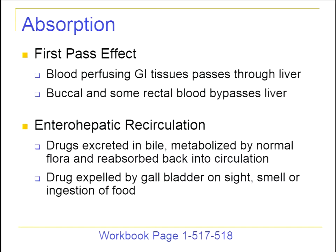We're now going to go into ADME: absorption, distribution, metabolism, and excretion. Starting with absorption — a few key concepts. First-pass effect: blood perfusing GI tissues passes through the liver before reaching systemic circulation. Enterohepatic recirculation occurs with drugs cleared through bile; they re-enter the gut, can be metabolized back to the original drug, and then reabsorbed, creating that recirculation.